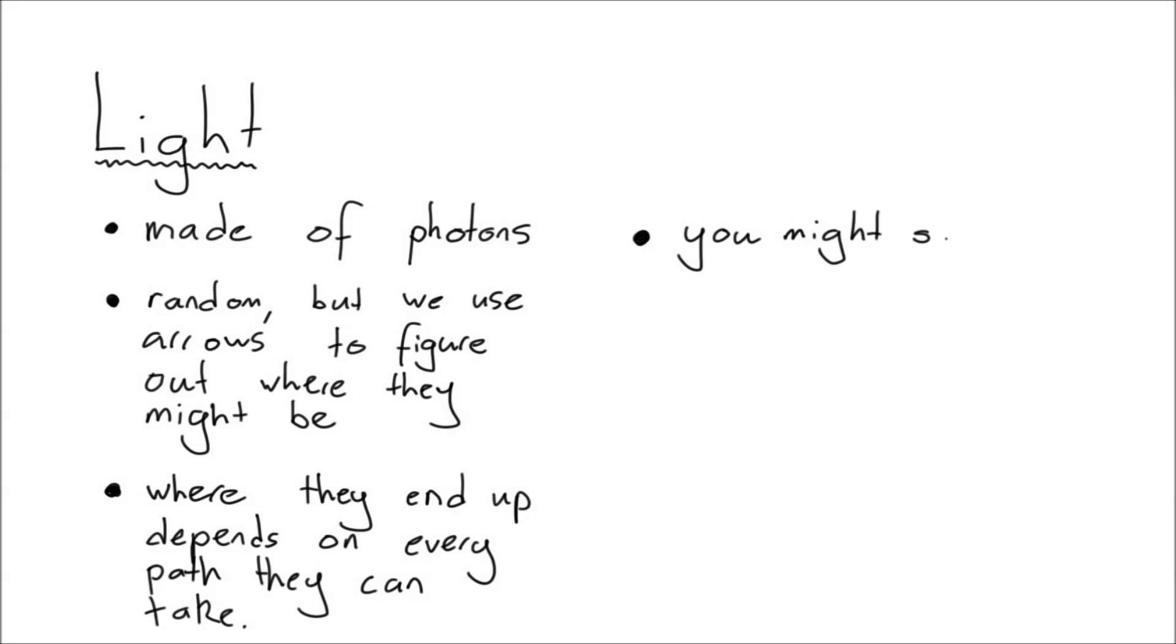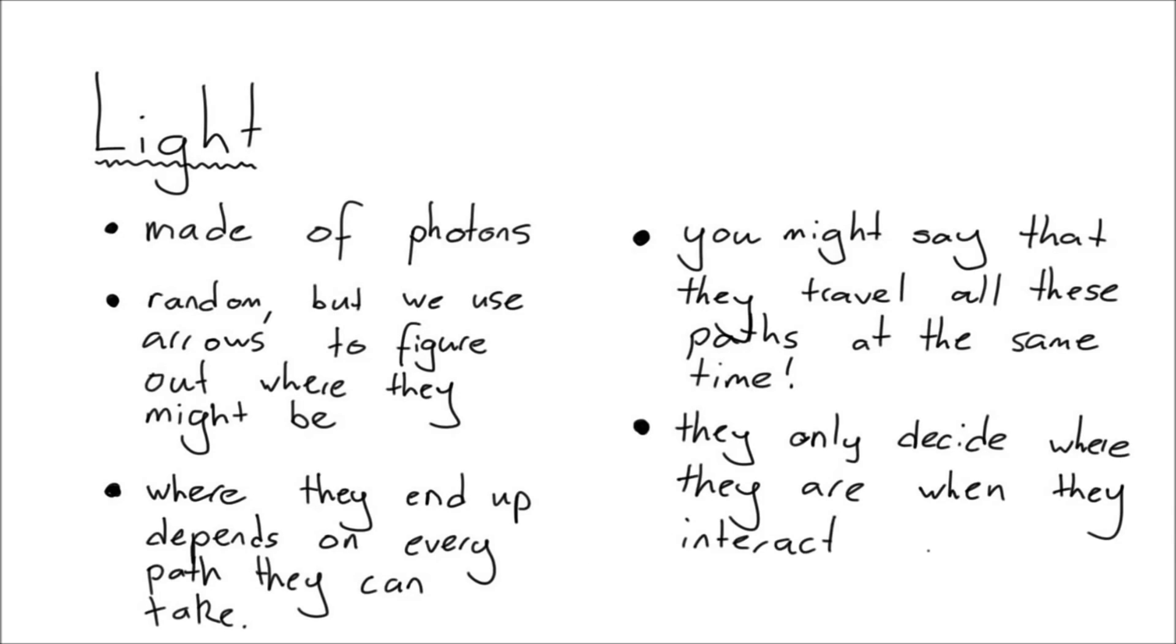So where light ends up depends on every possible path it can take. One interpretation of this is that the photons interfere with themselves and really take every possible path simultaneously. They only decide where they are when they interact with something else, like a detector.